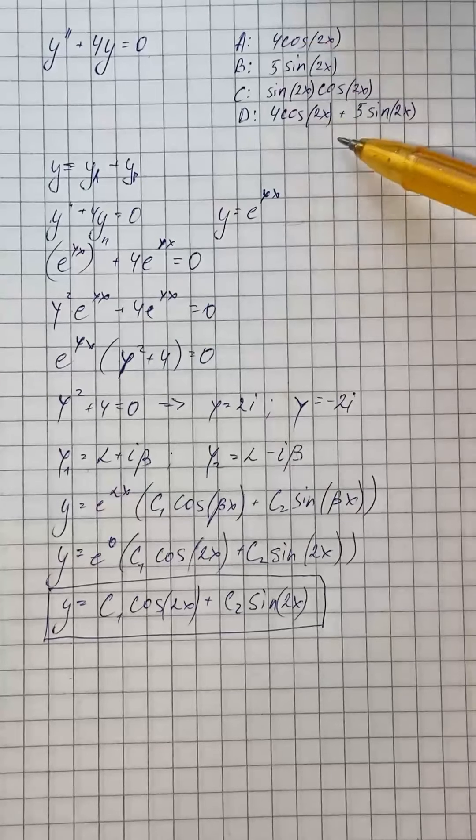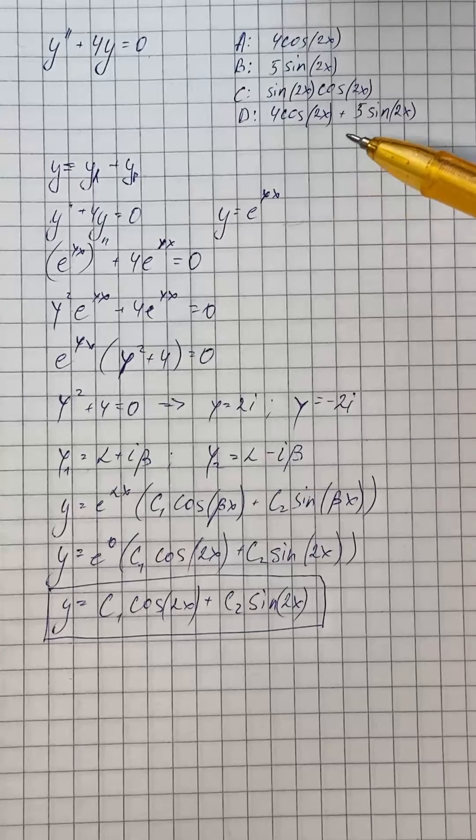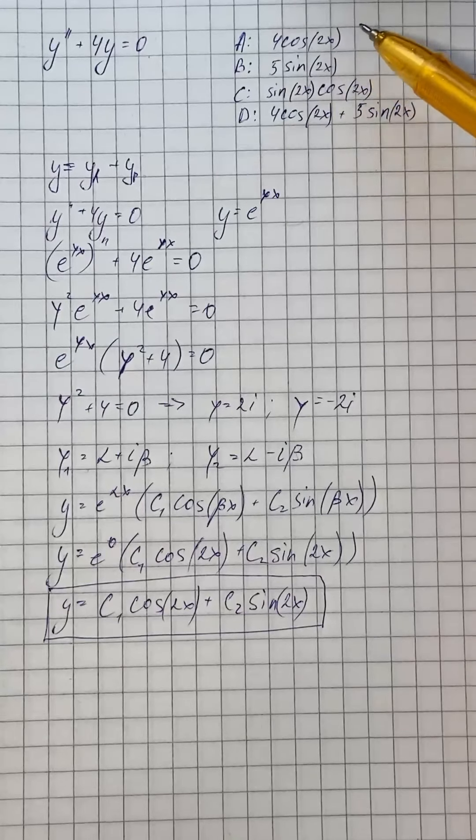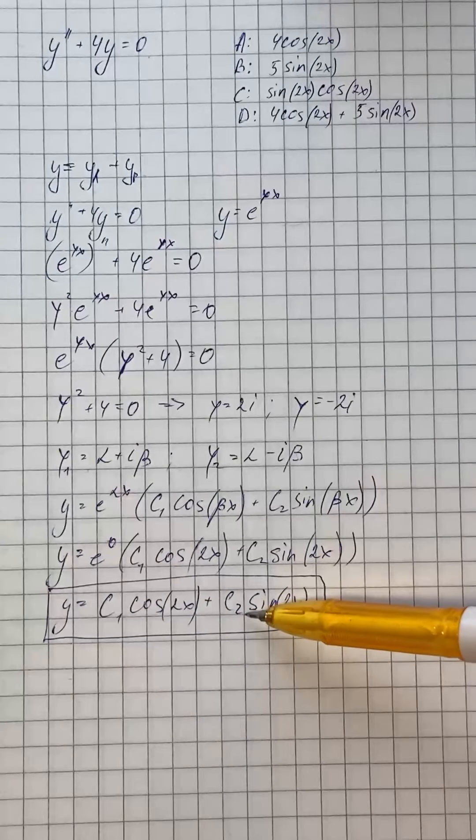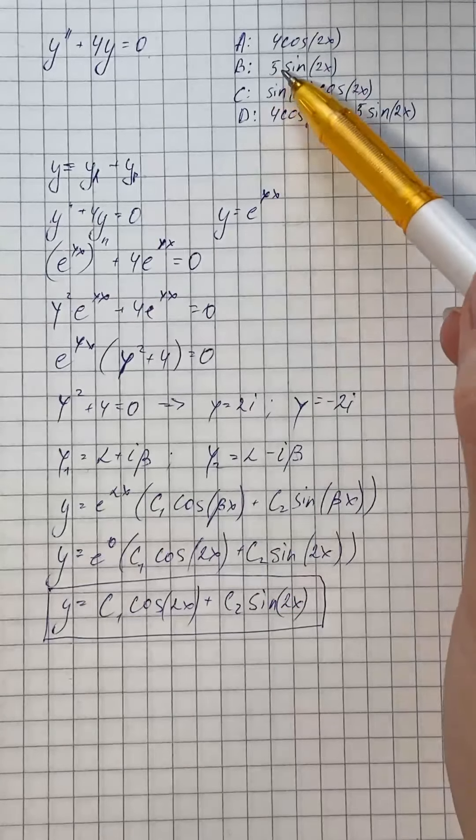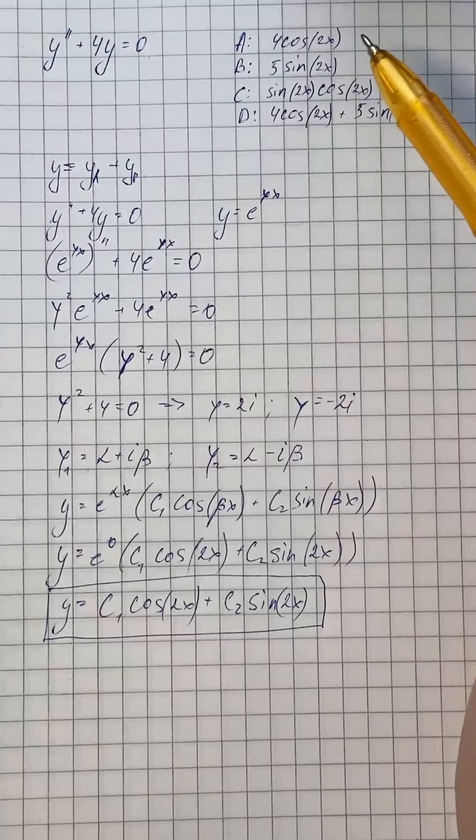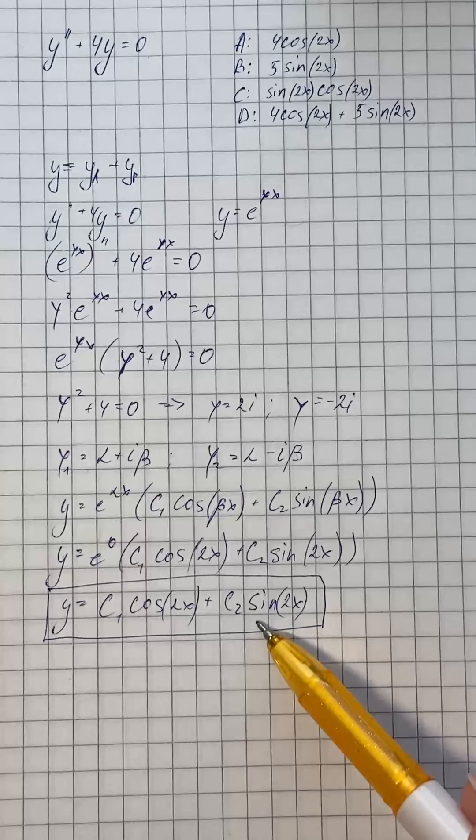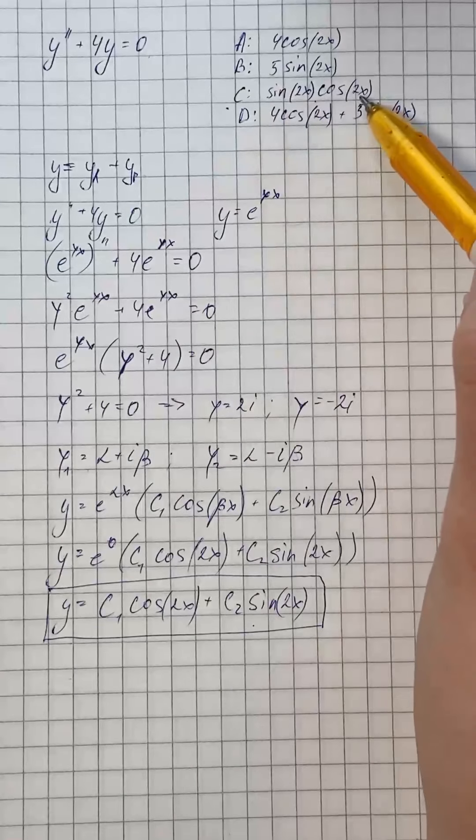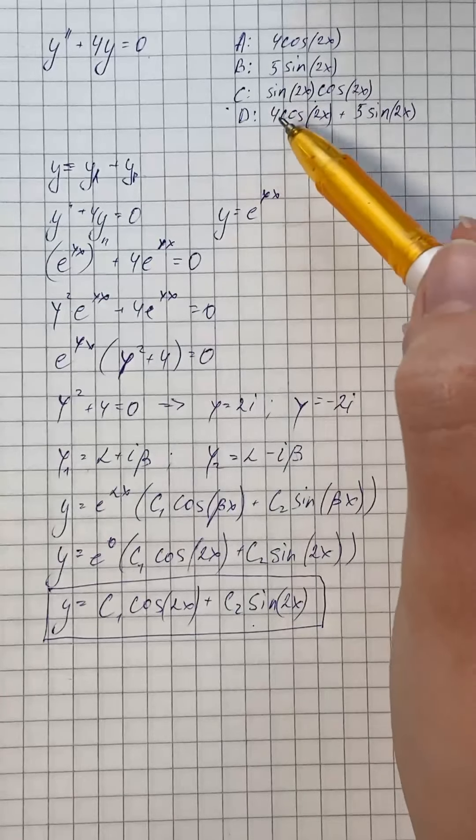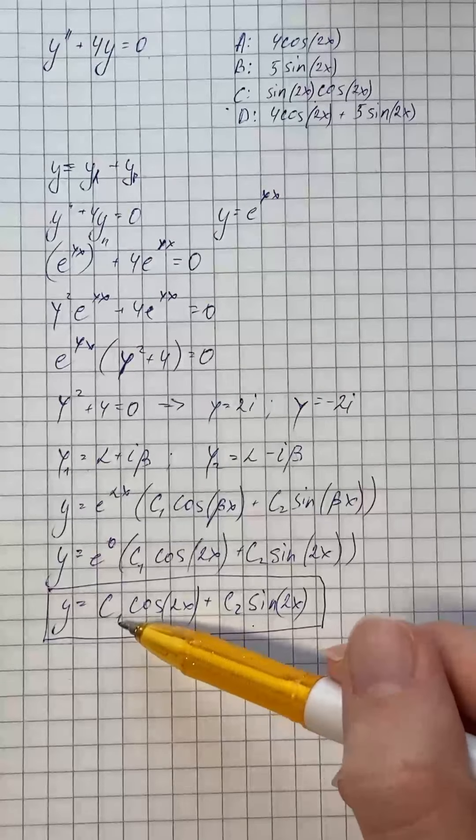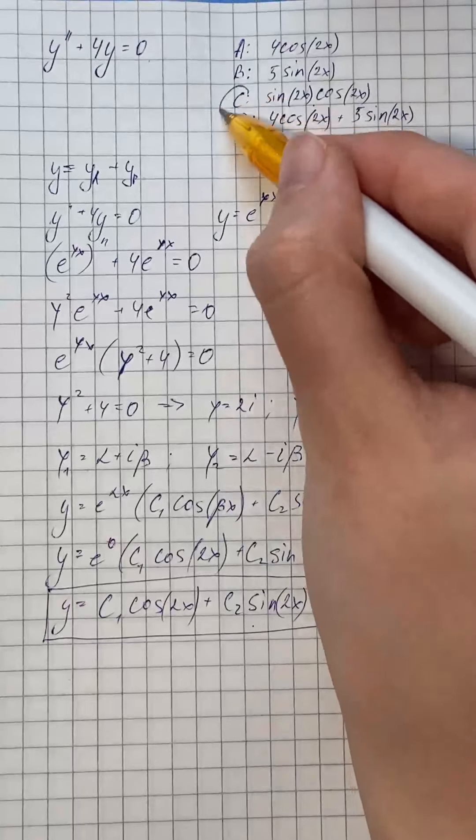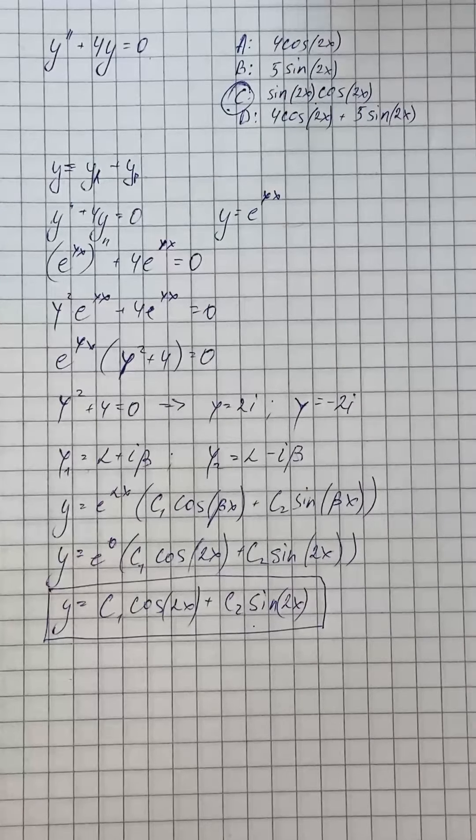So there are four options and one option is incorrect. The first option, 4 cosine of 2x, is possible when c1 equals 4 and c2 equals 0. The second option, 5 sine of 2x, is possible when c1 equals 0 and c2 equals 5. The third option, c, is not possible. And the last option is possible when c1 equals 4 and c2 equals 5. Hence the solution c is not possible.